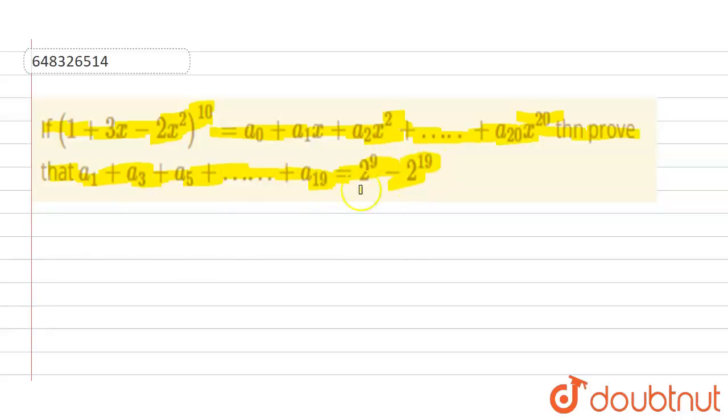The result is equal to 2 raised to power 9 minus 2 raised to power 19. Now coming to the solution, as we have given the function is 1 plus 3x minus 2x squared raised to power 10, we need to prove this term.